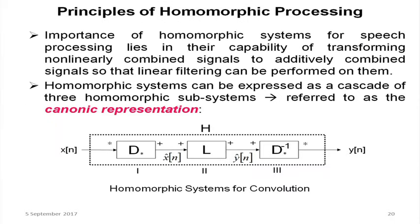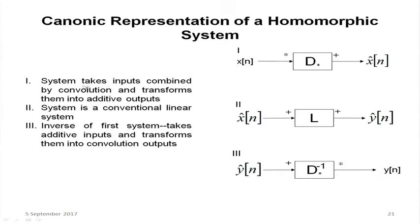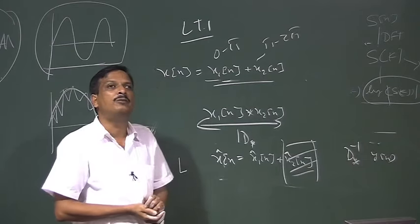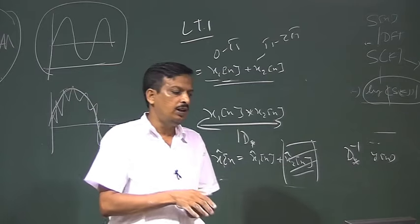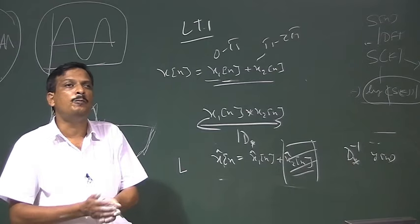If you see this picture, there are three parts. First part: the system takes input combined by convolution and transforms it into additive output. Second part: the system is a conventional linear system — a linear filter. Third part, the inverse of the first system: takes additive input and transforms it to convolution output. Whatever modification is done in the linear time-invariant part will be in the additive signal domain. This is called the canonical representation of the homomorphic system.